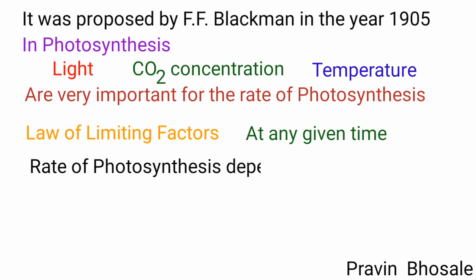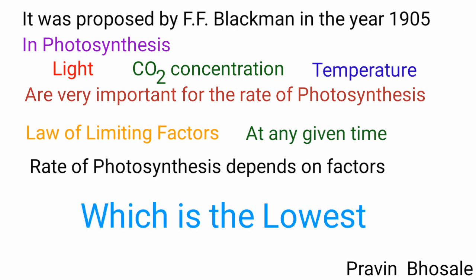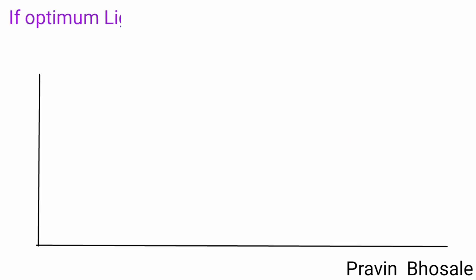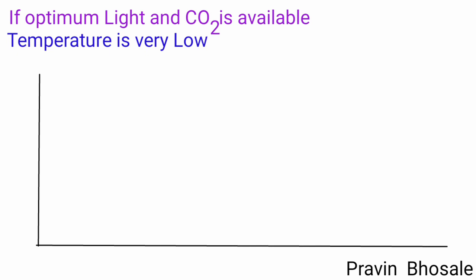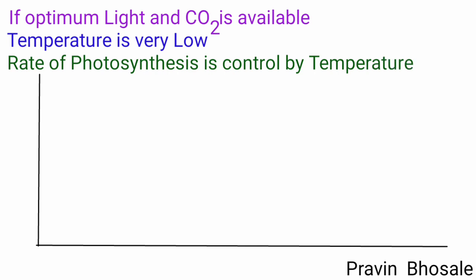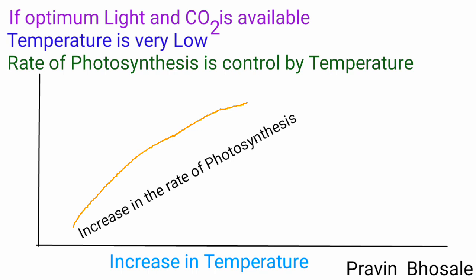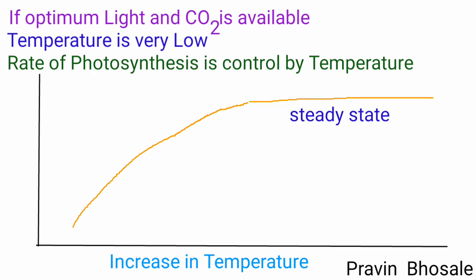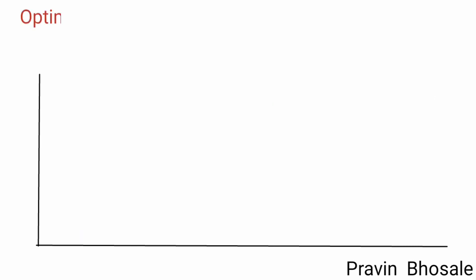For example, if optimum light and carbon dioxide is available but temperature is very low, then the rate of photosynthesis will be controlled by temperature. An increase in temperature will cause an increase in the rate of photosynthesis, and then there will be a steady state.